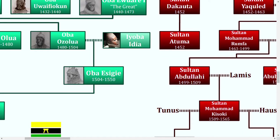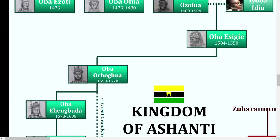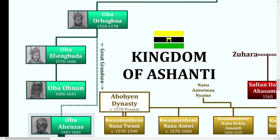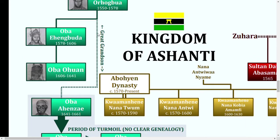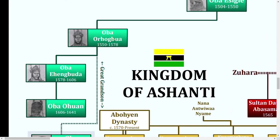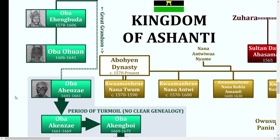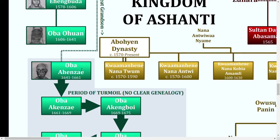He passed it through his son Oba Isigi, to his son Oba Orhagbua, to his son Ehengbua, and finally down to Oba Ohuan. This is where it starts to get a little bit confusing. Oba Ohuan actually left no heirs — he had no children. So the person who succeeded him on the throne was the great-grandson of Orhagbua, right here: Oba Ahenzai.